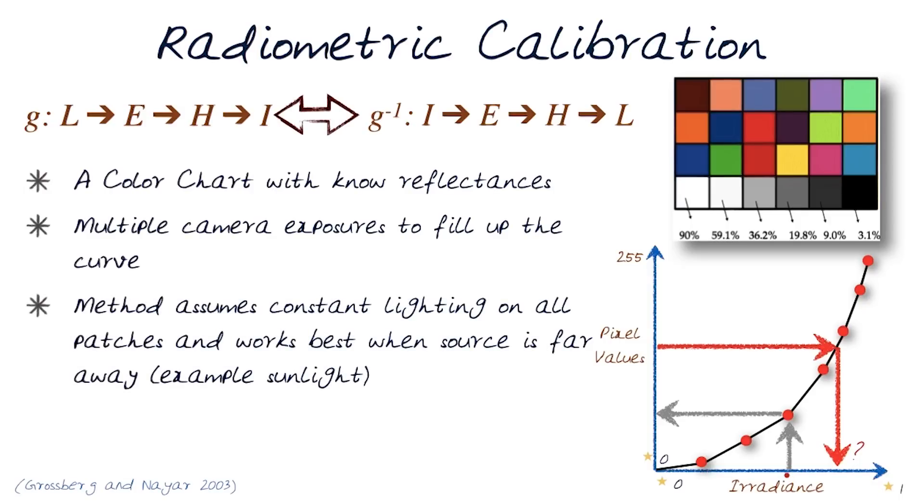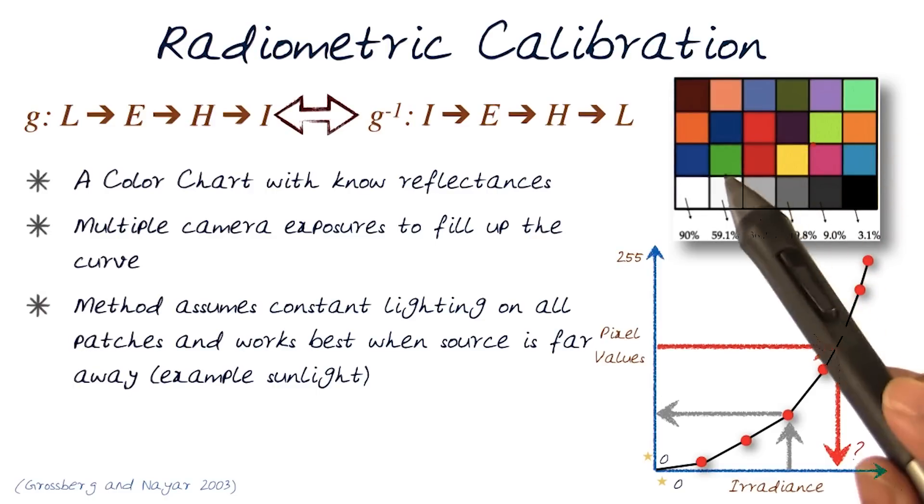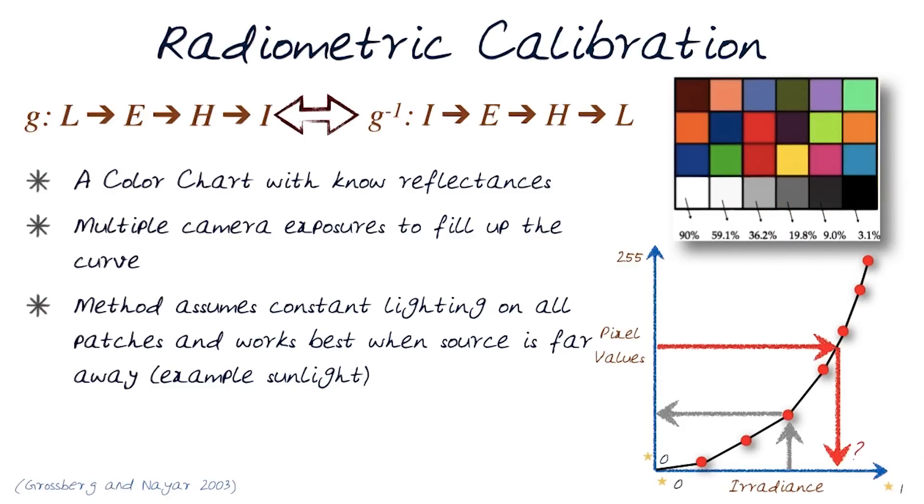There are a few assumptions here when we play around with images like this. It assumes constant lighting and all patches are equally well lit, so it can't be a focused light source. It assumes the light source is really far away and is equally lighting the whole scene. For example, something like natural sunlight when you light it with this kind of stuff will allow you to do this.